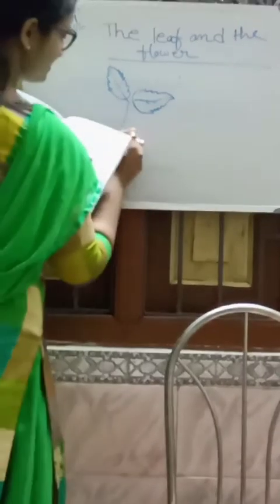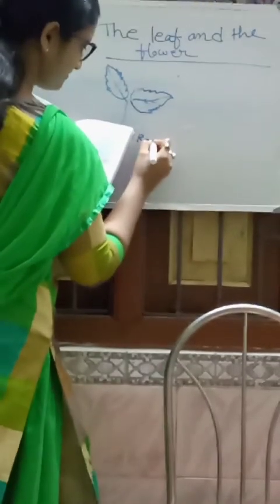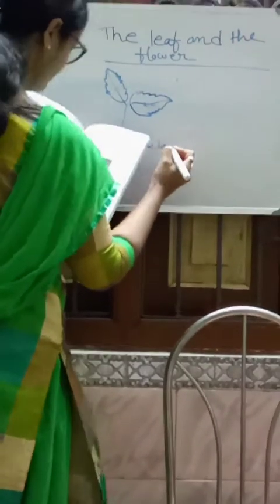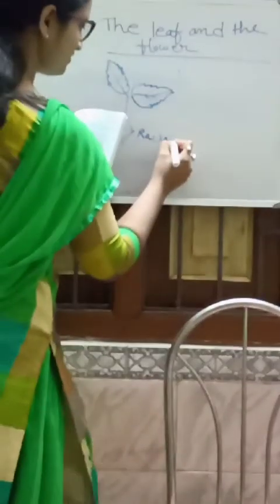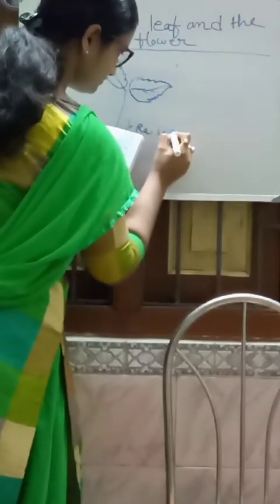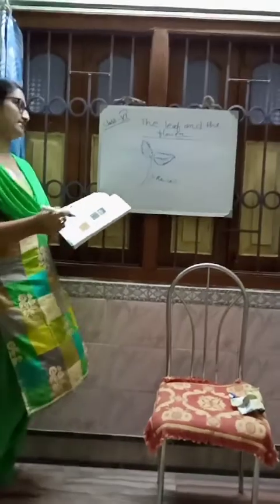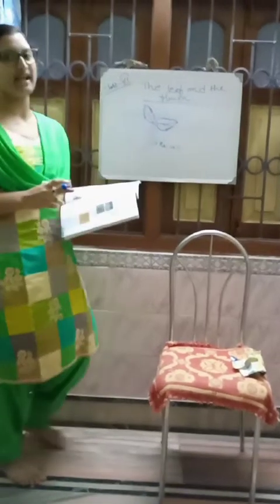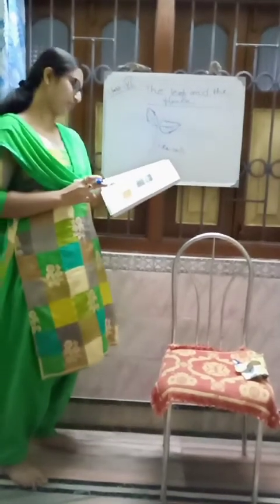The main stalk or stock of a compound leaf is called the rachis.